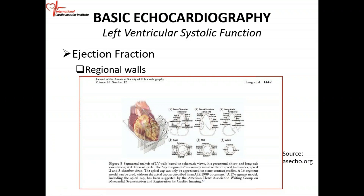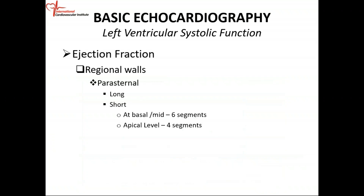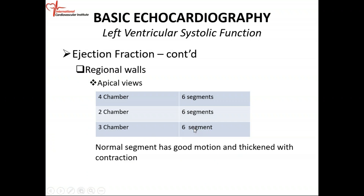So that's how you divide the heart into segments or regional walls. At the basal level and the mid, you have six segments. At the apex, you have four. In the four-chamber view, you have six segments; two-chamber view, you also have six segments; three-chamber view, you also have six segments.